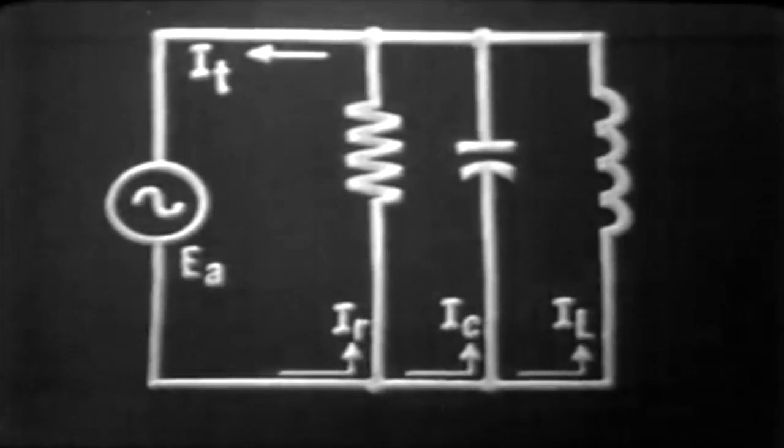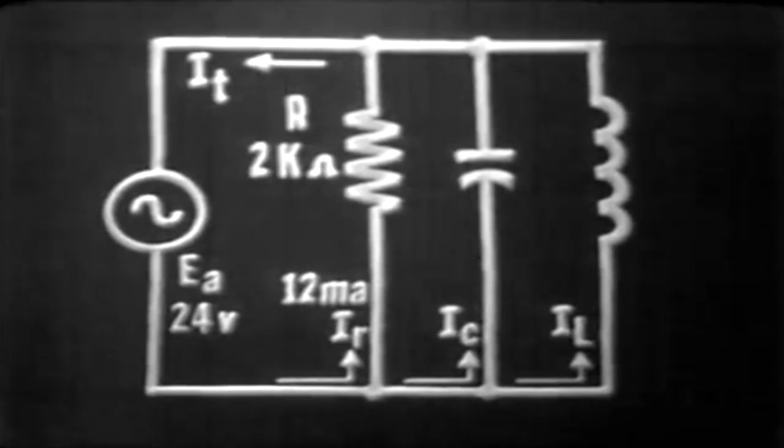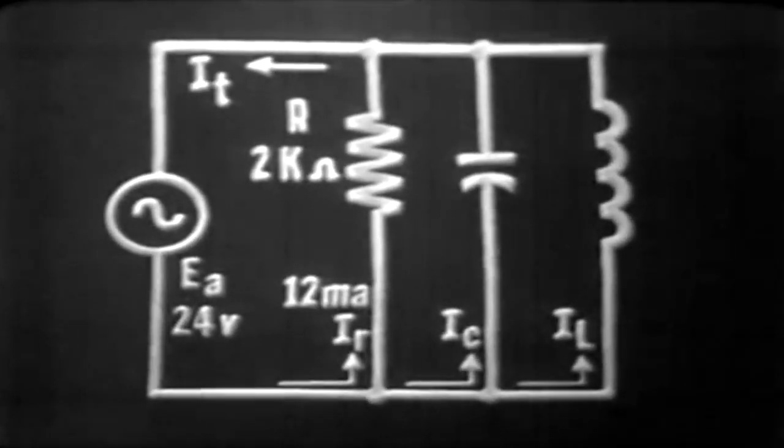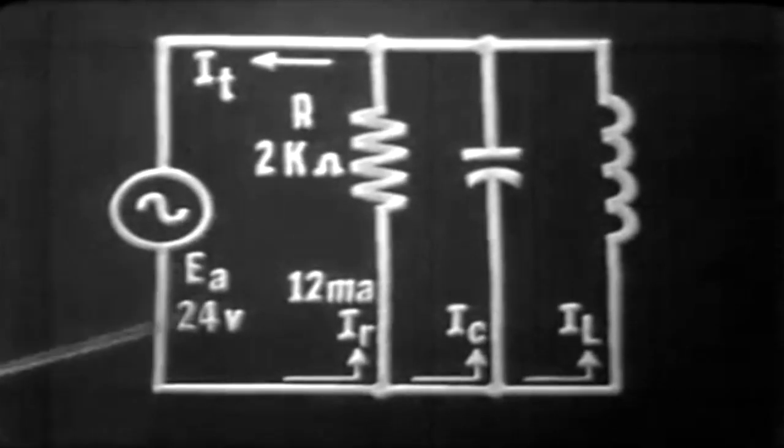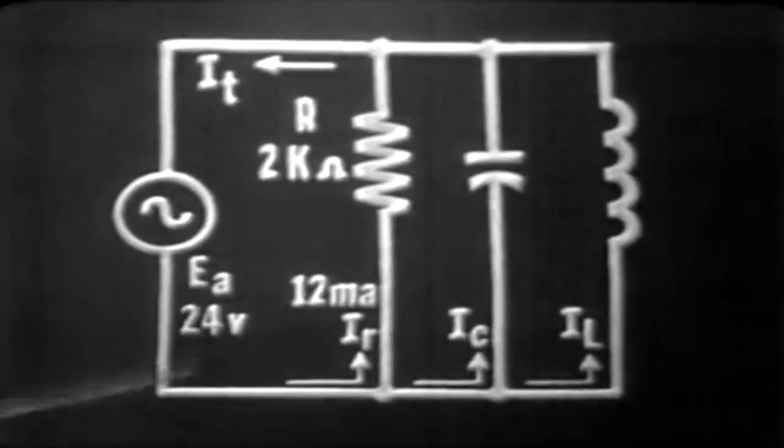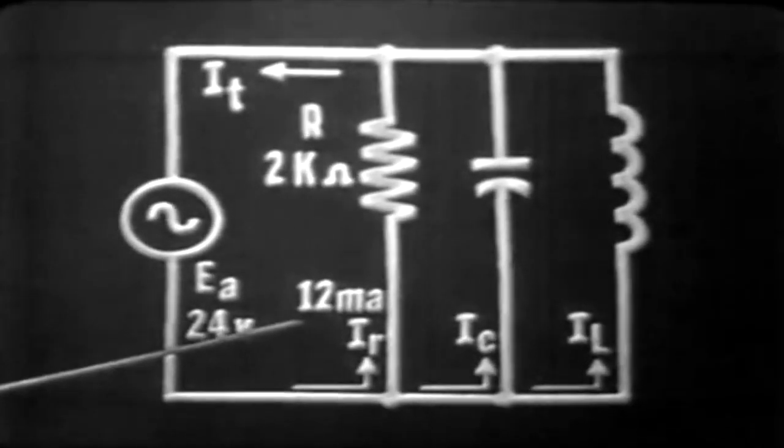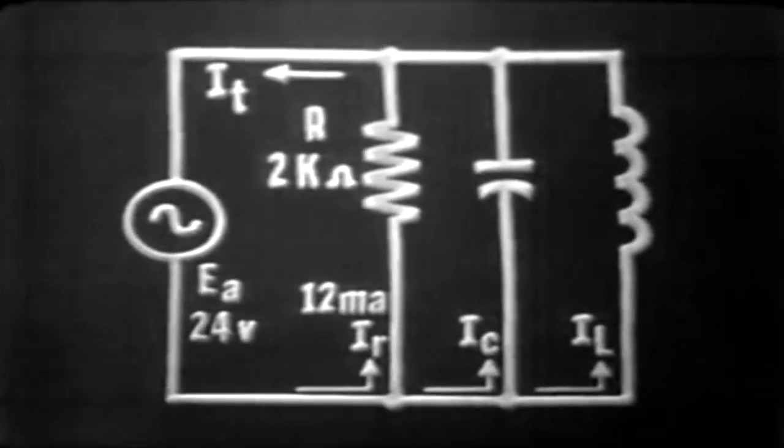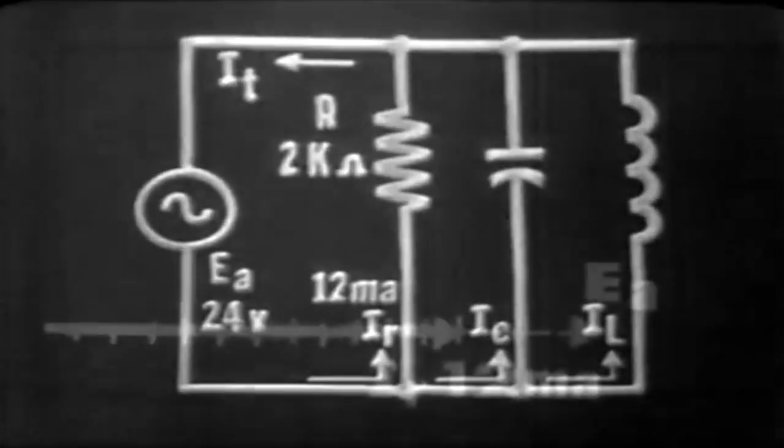Solving for branch currents by applying Ohm's law and applying the current vectors and plotting these vectors, suppose we assume our resistor, 2k ohms, with an applied voltage of 24 volts. Using Ohm's law, our current would come out to be 12 milliamperes. We would plot this on a vector where IR would be equal to 12 milliamperes at zero degrees and in phase with EA.